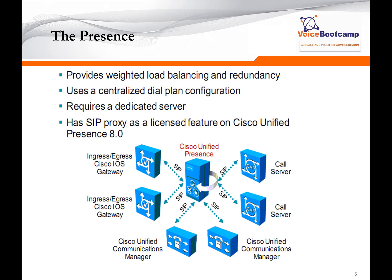Presence can be used to provide weighted load balancing and redundancy. It is used for centralized dial plan configuration and is a SIP proxy feature that communicates with call manager. You could use presence simply for SIP routing — for example, from one call server you can send traffic to SIP presence, and presence will send the traffic to another call server. You can have an ingress gateway send calls to SIP presence, and presence sends the calls to egress and so on. So, aside from presence acting as instant chatting, it is also a SIP proxy server for routing calls between endpoints.